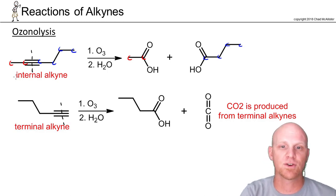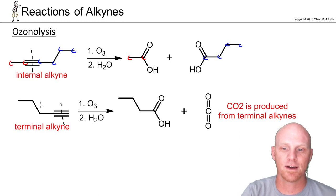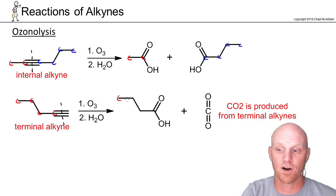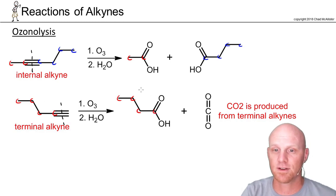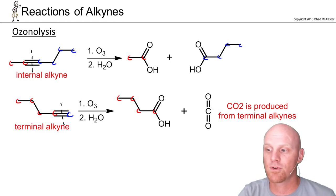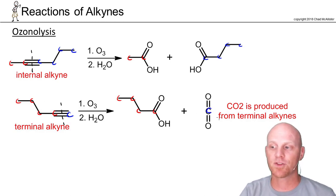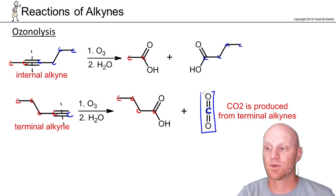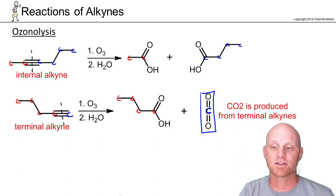When you do this with a terminal alkyne the result is a little bit funky. With a terminal alkyne you get a carboxylic acid on one side — in this case a four-carbon carboxylic acid — but on the other side, from that one carbon, you'd initially form formic acid, which is not the most stable thing, and it actually further oxidizes to plain CO2. So for a terminal alkyne you're going to get CO2 from that side — just something to note.